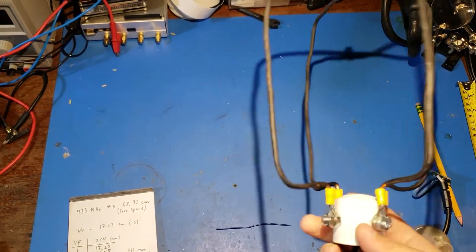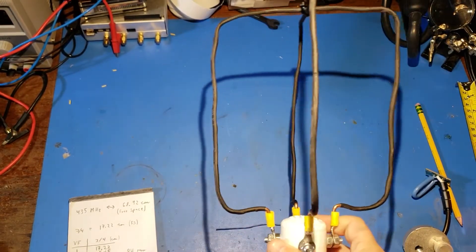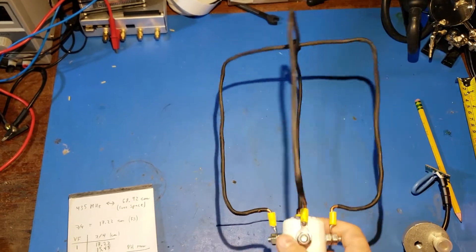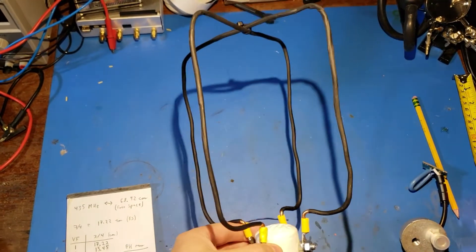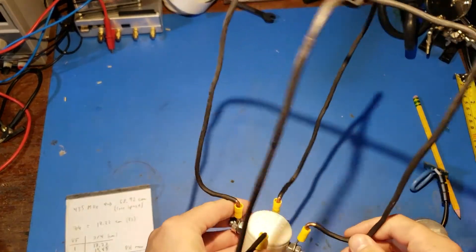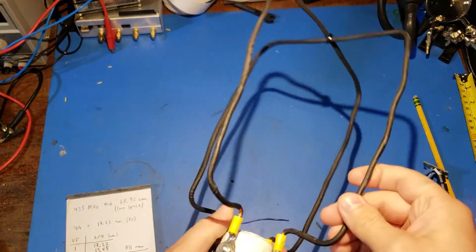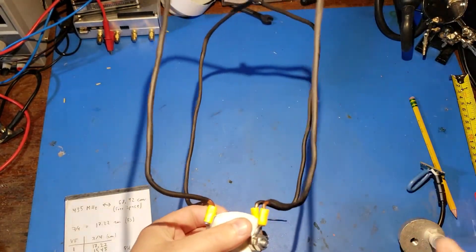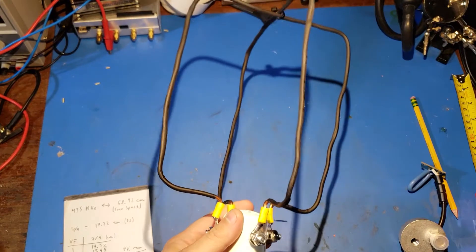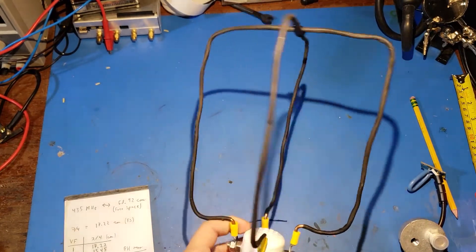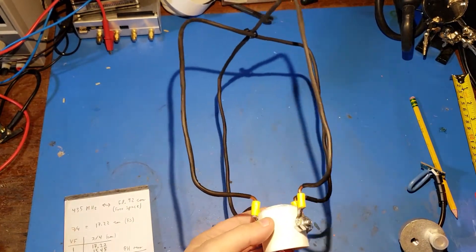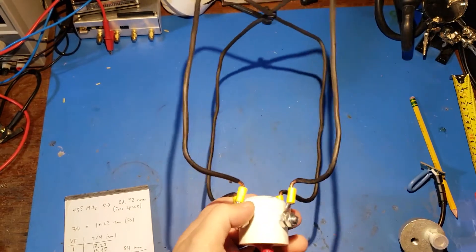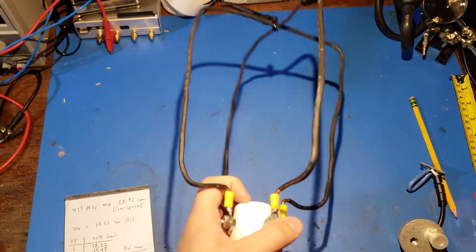A loop antenna that's a full wavelength long typically has an input impedance near 100 ohms. Now, in order to match to 50 ohms for two loops that we're going to be driving both loops, we can simply place the loops in parallel with each other, and then we effectively get 100 ohms in parallel with 100 ohms, which gives us a 50 ohm input resistance.